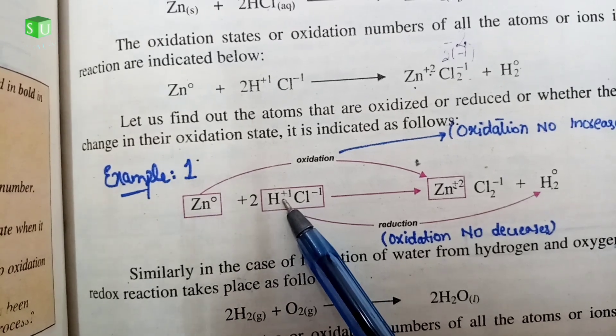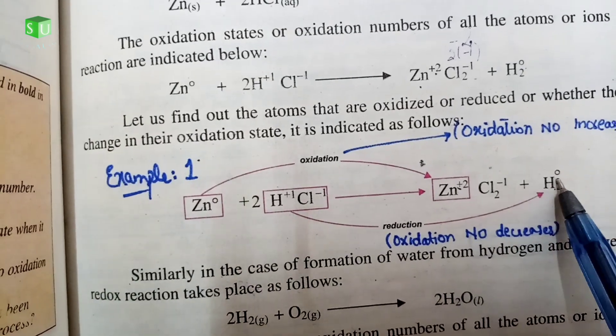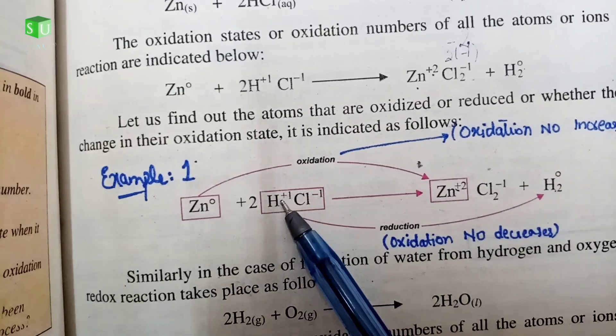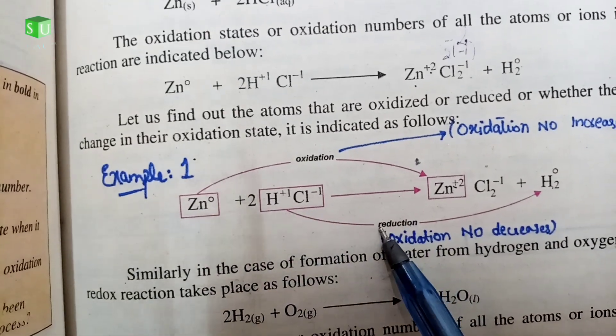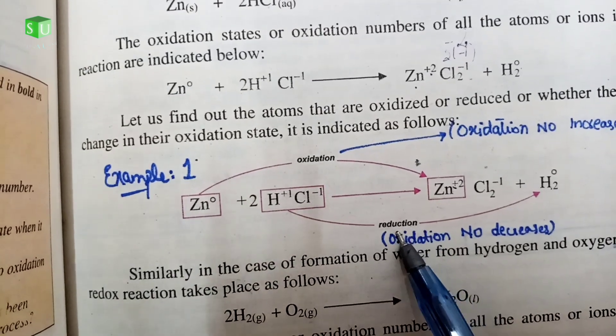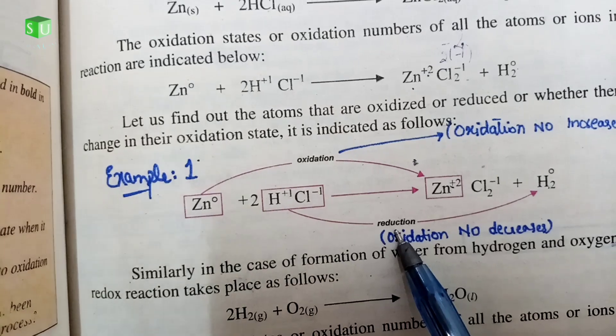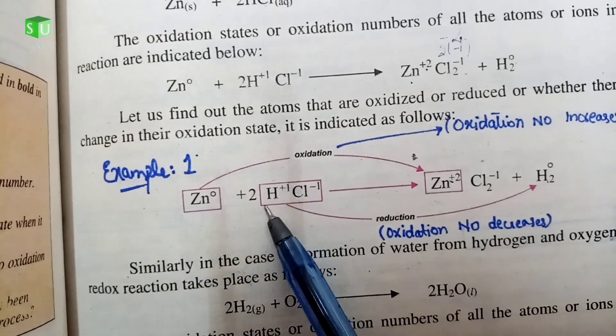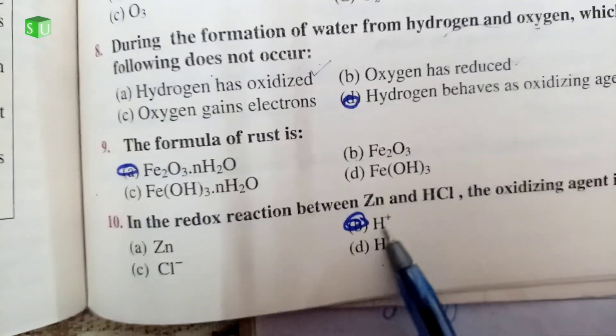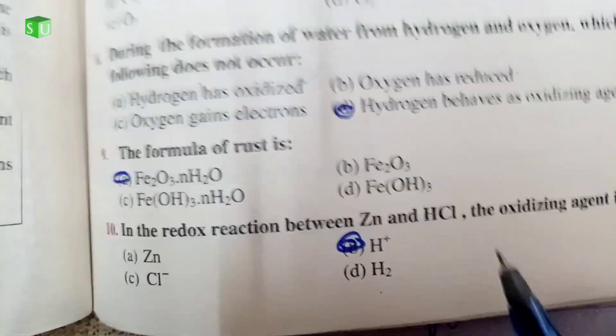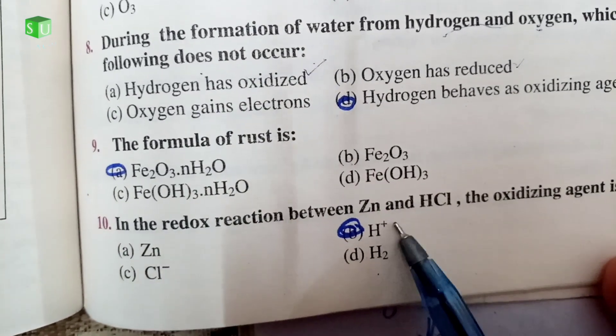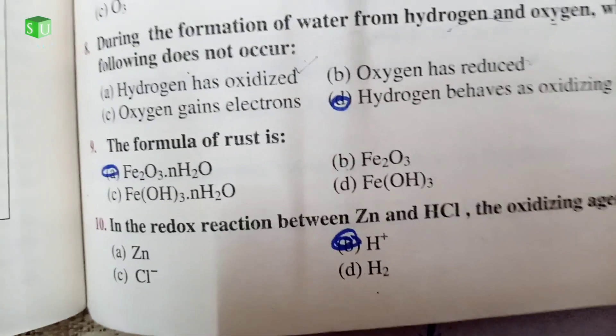Gain of electron is called reduction and the substance which undergoes reduction oxidizes the other and we call it oxidizing agent. We have hydrogen. Correct option is B. HCl is the oxidizing agent.